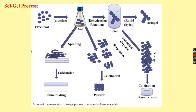One method of synthesis of nanomaterials is the sol-gel process, a very familiar process. The synthesis of nanomaterials by the sol-gel process offers the possibility to produce nanomaterials with novel predefined properties in a simple process at relatively low cost. The process involves several distinct steps.